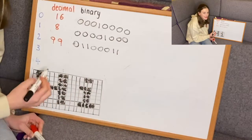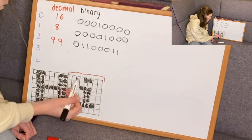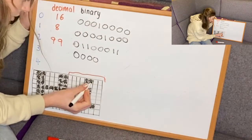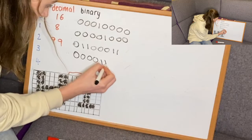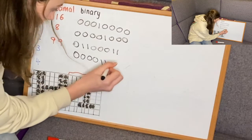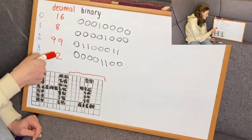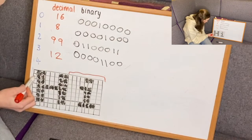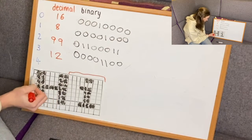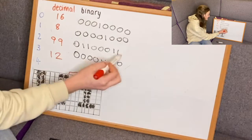We then move on to the next set of eight pixels: four zeros, two ones, then two zeros — converting that to decimal gives 12. The next set of eight pixels is just a duplicate of the set above, so we can copy that value.